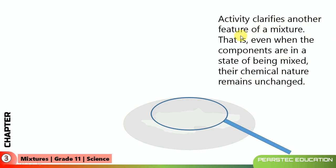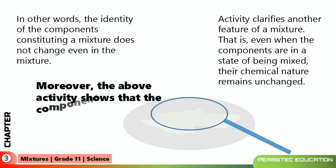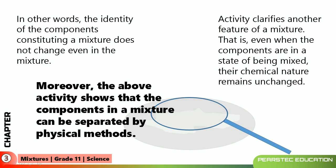This activity clarifies another feature of mixtures — even when the components are in a state of being mixed, their chemical nature remains unchanged. The identity of the components constituting a mixture does not change even within the mixture. Moreover, the above activity shows that the components in a mixture can be separated by a physical method. Filtration is a physical method, and here we used filtration to separate the two substances.